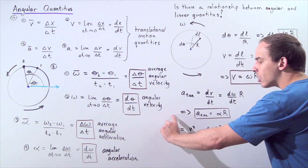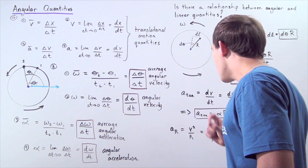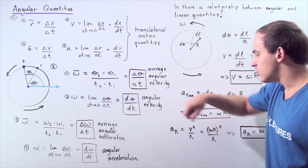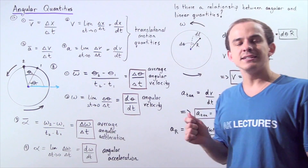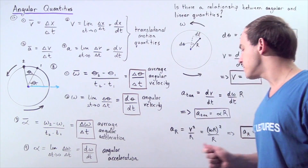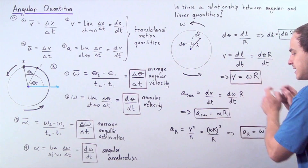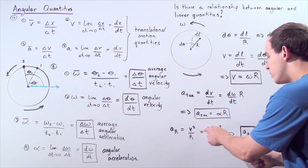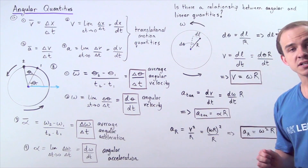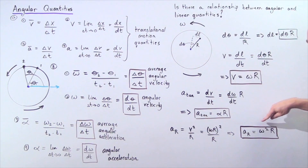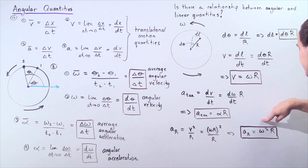What about the radial or centripetal acceleration? We know that centripetal acceleration equals v squared divided by radius R. Taking our expression v equals omega times R and substituting and squaring, we get that the radial or centripetal acceleration equals omega squared times R.